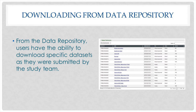Data from shared studies can be downloaded from the data repository by clicking on the desired study title from the data repository table, then choosing the data sets of interest from the submitted data set section of the study profile page. When downloading from the repository, users will download the data set exactly as it was uploaded by the study team, meaning data for specific assessments may be separated across multiple submissions or data sets.